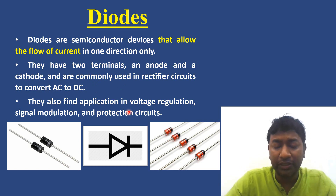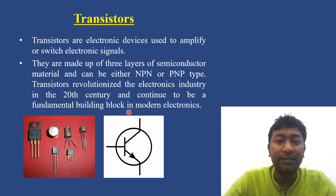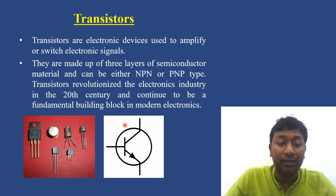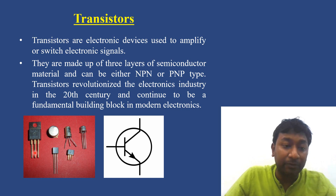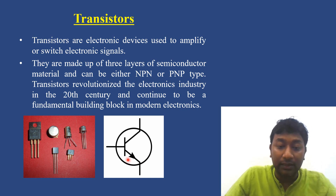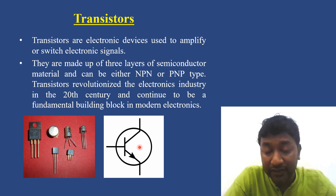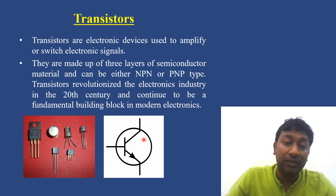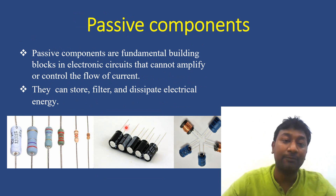Transistors are electronic devices used to amplify or switch electronic signals. They are made up of three layers of semiconductor material and can be either NPN or PNP type. Transistors revolutionized the electronics industry in the 20th century and continue to be a fundamental building block in modern electronics. A transistor has three terminals: emitter, base, and collector. We have already seen amplifiers which increase the volume and strength of a signal — this is one of the major applications of transistors.